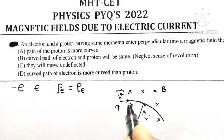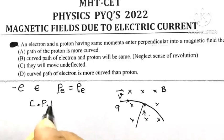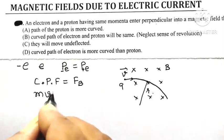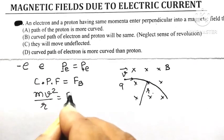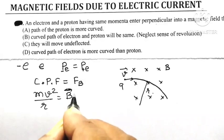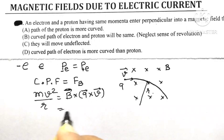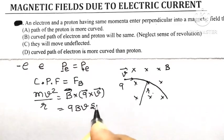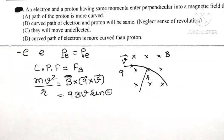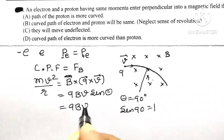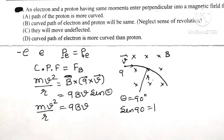The necessary centripetal force required for circular motion is provided by the force due to the magnetic field. Centripetal force is Mv² divided by R, and the force due to the magnetic field is QBV sine theta. Here theta is 90 degrees, so sine 90 equals 1. Therefore, QBV equals Mv² divided by R.